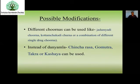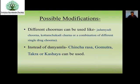Possible modifications: if Kulathadi Churna is not available, use Kottamchukkadi Churna or Jadamayadi Churna or different Churna combinations. Instead of Dhanayamla, use Chincha Rasa, Gomutra, Takra, or any Kashaya having Amla Rasa Pradhana Dravyas in place of Dhanayamla.